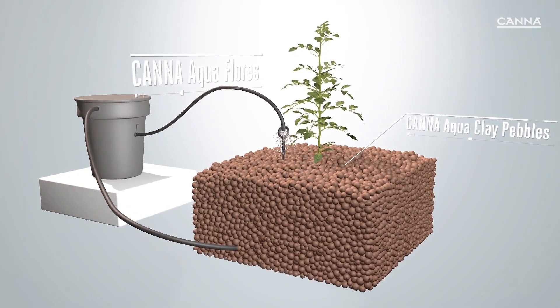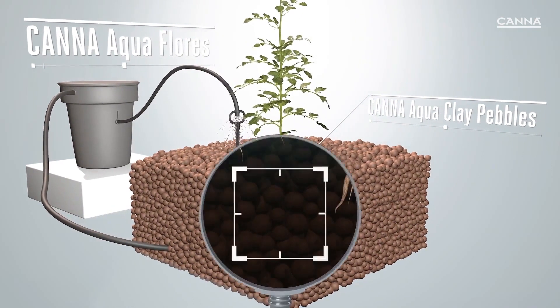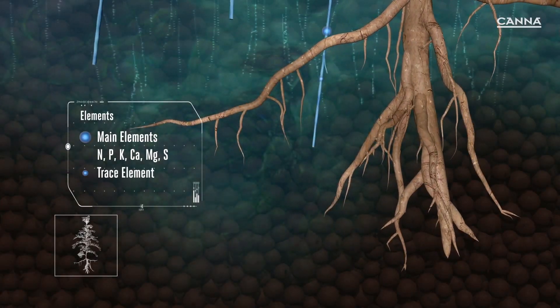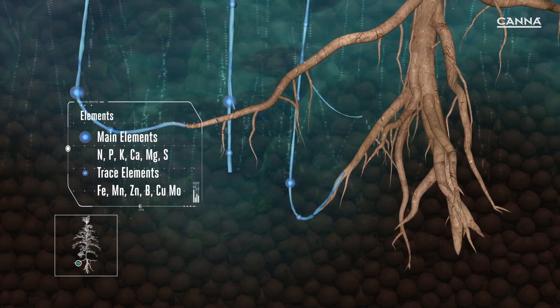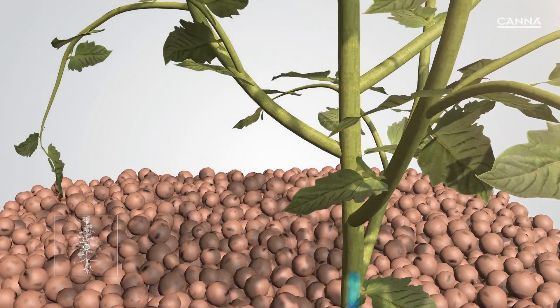Use Canna Aqua Flores together with Canna Aqua Clay Pebbles in a recirculating system during the blooming phase. This will ensure that your plant receives all the essential elements it needs to optimize its flowering potential.